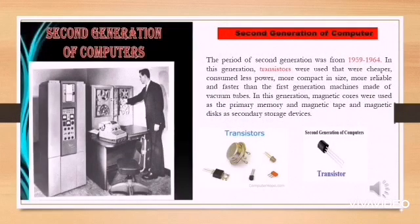The second generation computers were developed between 1959 to 1964. What is the difference between first generation and the second generation computers? The second generation computers used transistors instead of vacuum tubes.